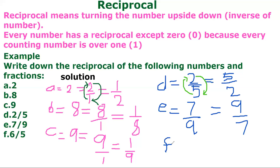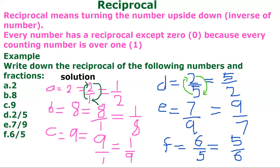For F: the reciprocal of six over five is already a fraction, so there's no need to convert. When you have a fraction like this, you just write the inverse — turn the numbers upside down — and that will be five over six. So always, the reciprocal means turning the number upside down or the inverse of the number. For whole numbers, the denominator is always one, so they are divisible by one.